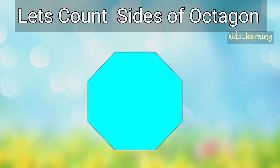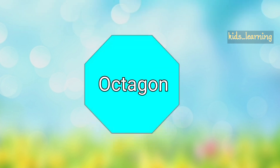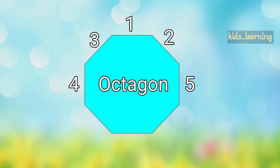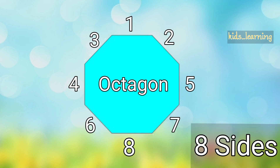Now let's count the sides of an octagon. 1, 2, 3, 4, 5, 6, 7, 8. An octagon has 8 sides.